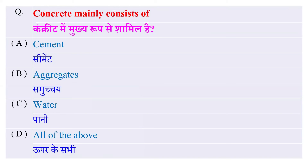Concrete mainly consists of — concrete में मुख्य रूप से क्या शामिल होता है? Options: cement, aggregates, पानी, या ये सभी — और इसका सही जवाब है कि ये सभी।